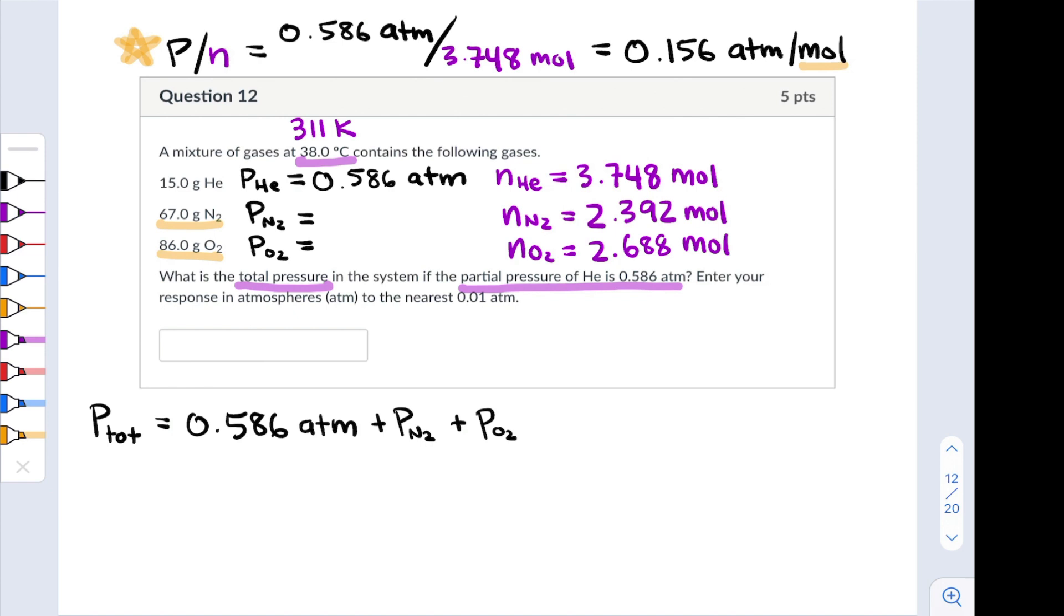To find our partial pressures, we multiply each of those moles by our constant ratio of 0.156 atmospheres per mole. For O2, we end up with 0.419 atmospheres. That's 0.156 times 2.688. For nitrogen, we end up with 0.373 atmospheres.